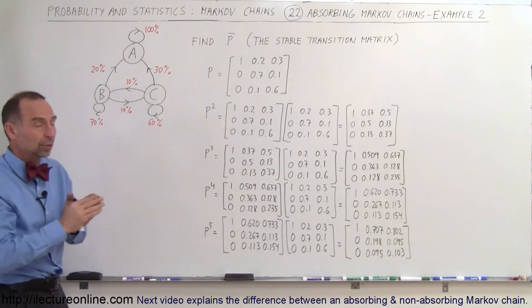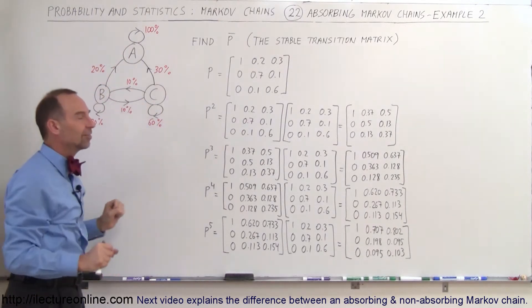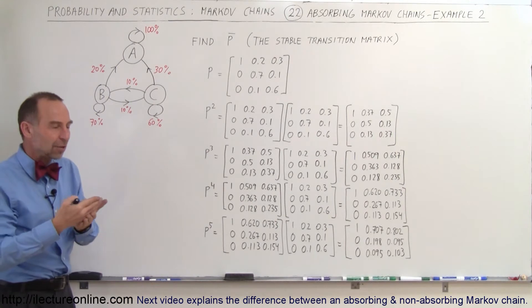So in this case we have what we call an absorbing Markov chain, so all the customers will end up in A, none will end up in B and C. So if you have a transition matrix and we want to find the stable transition matrix...